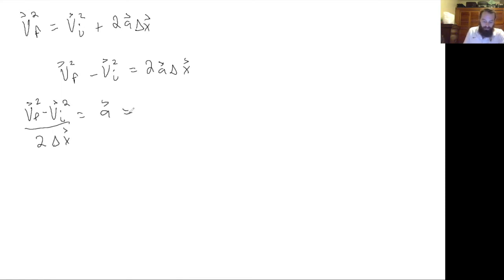Now we've solved for acceleration. We can plug in the values that we were given at the beginning of the problem. v_final was zero, v_initial is 26.88 meters per second, and 2∆x is 2 times 40.54 meters. When you plug that into your calculator, you get -8.91 meters per second squared.